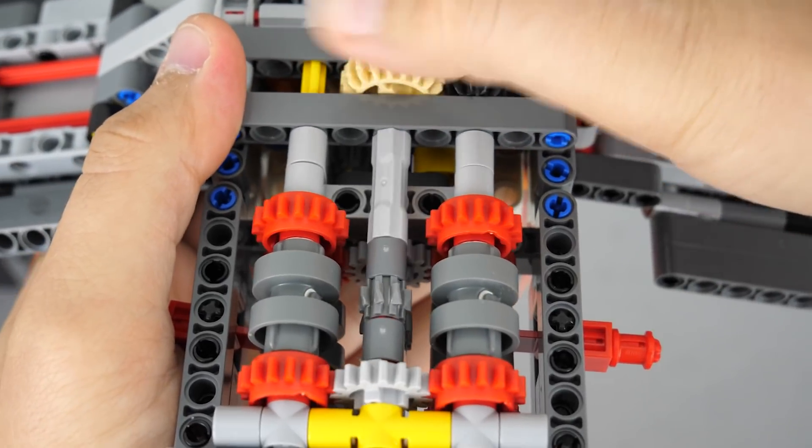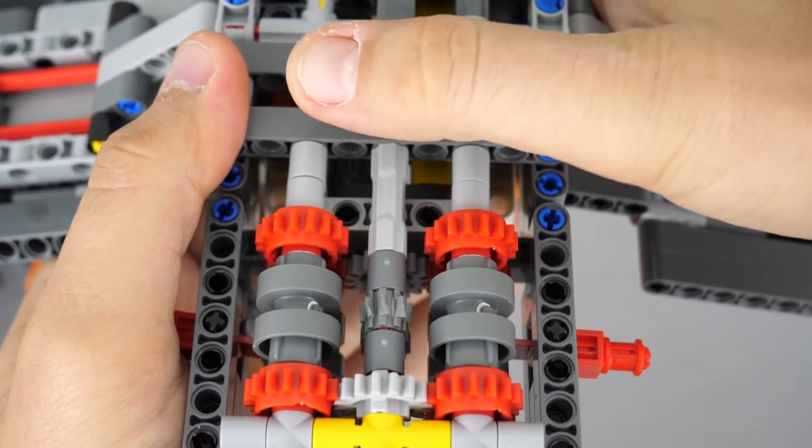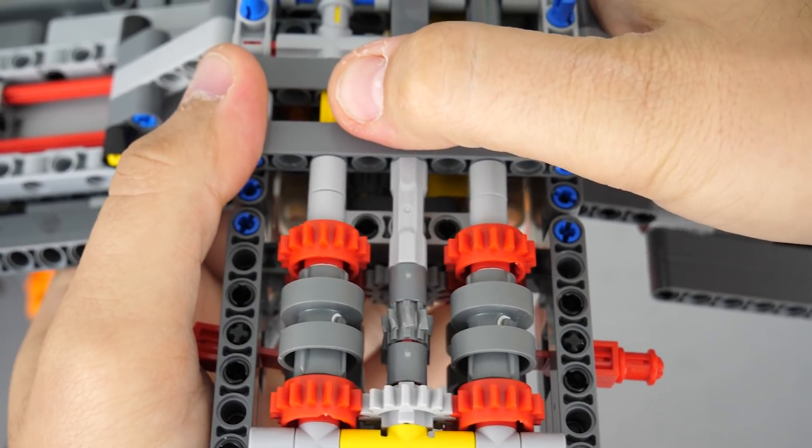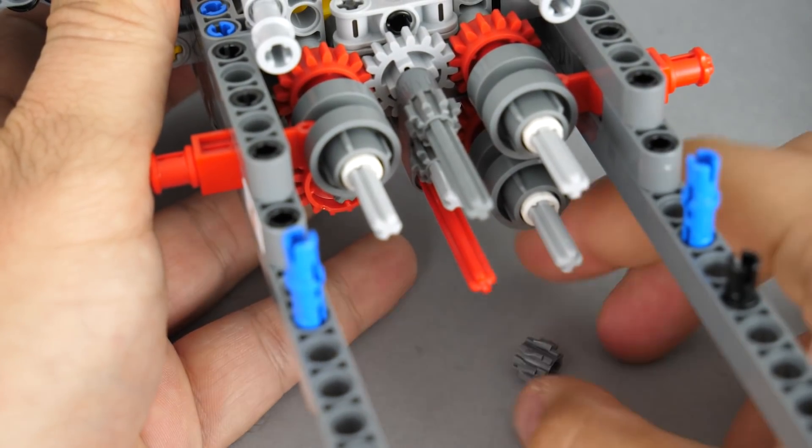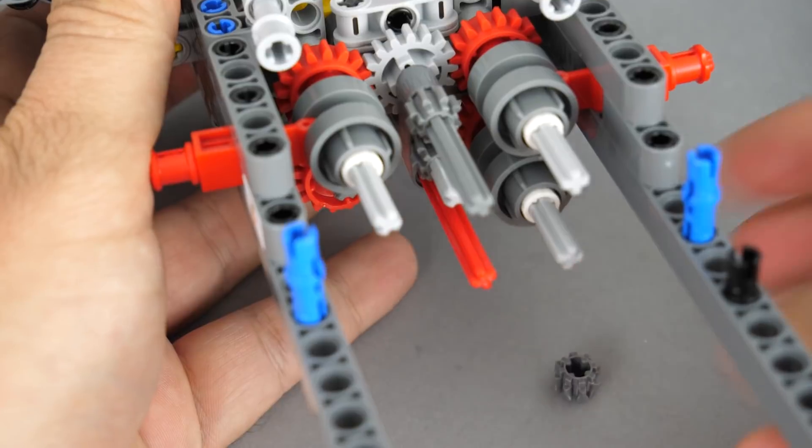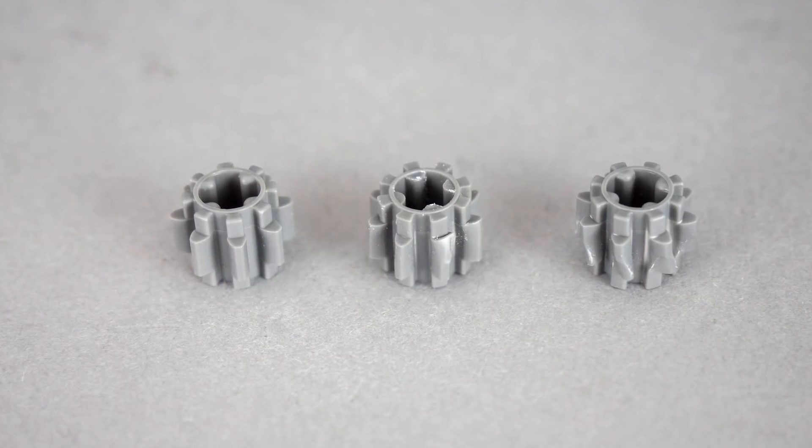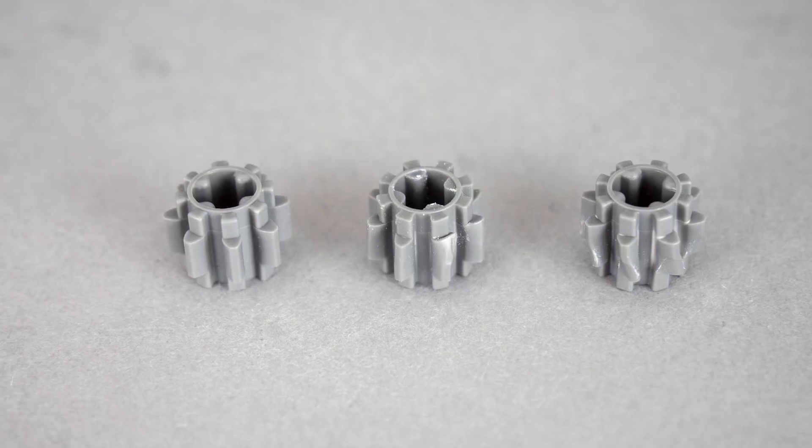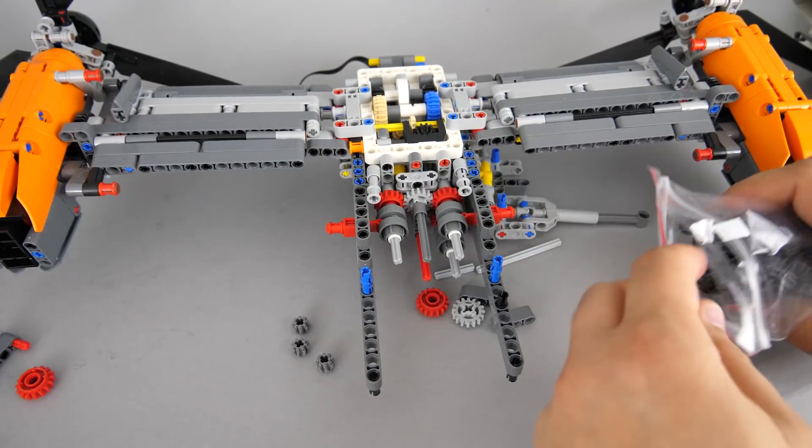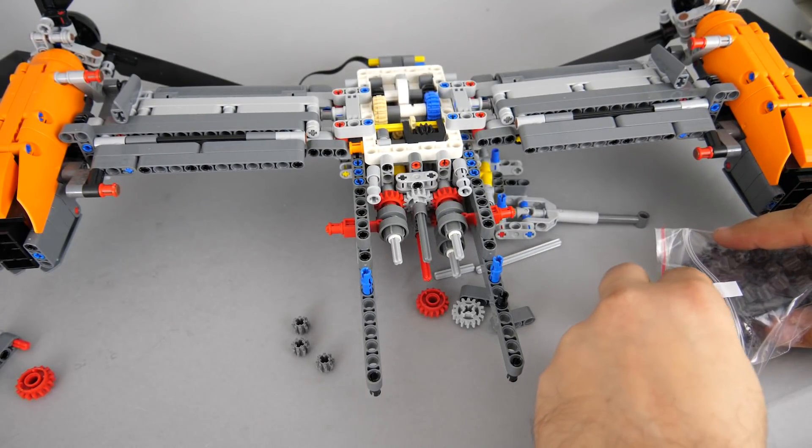Here you can see the lowest 8-tooth gear, and it looks terrible, almost all the teeth are destroyed. If I remove all 3 then you can see that the lowest one is in the worst shape, the middle one seems to have a single tooth bended, and the top one has no visible damage. Now let's add 3 brand new gears and try this again.